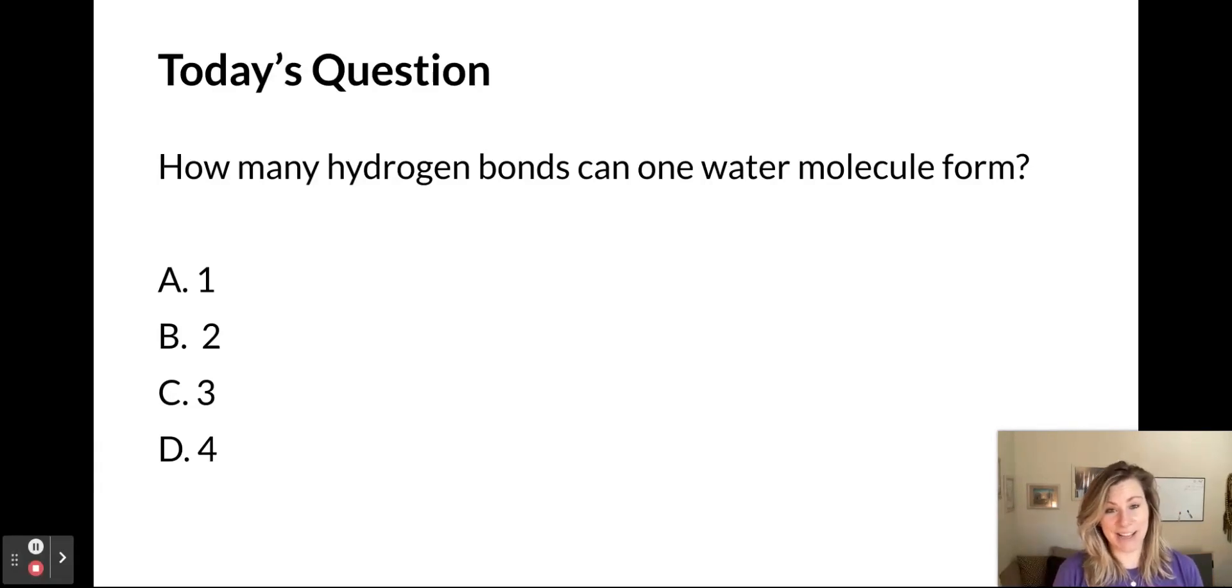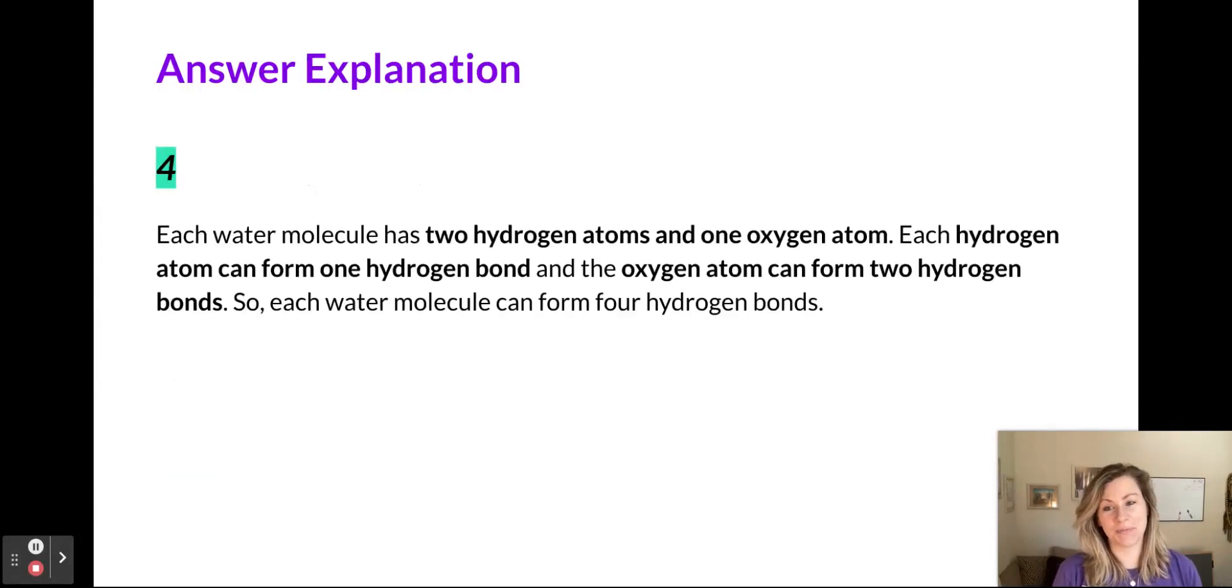All right, let's take a look. If you chose D) 4, you're correct. Let's look at why. Every water molecule has two hydrogen atoms and one oxygen atom. Each hydrogen atom can form one other hydrogen bond, while the oxygen atom can form two hydrogen bonds.